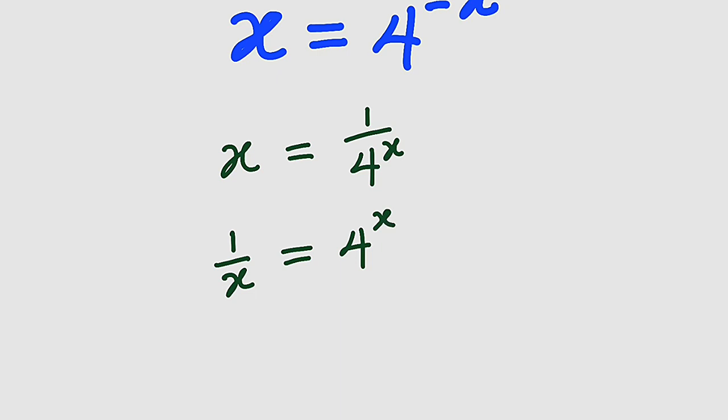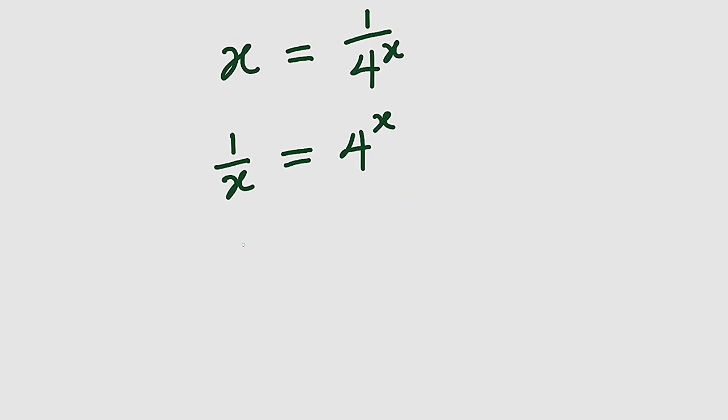Next, we can raise both sides to a power of 1/x to eliminate this x on the right hand side. So to the left hand side we have (1/x)^(1/x). We do the same thing: 4^x raised to the power of 1/x.